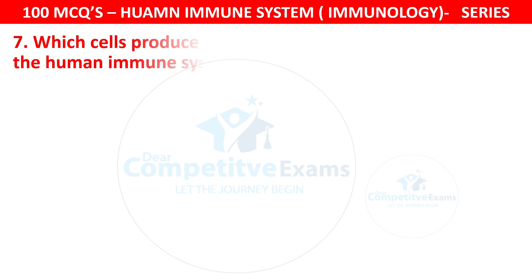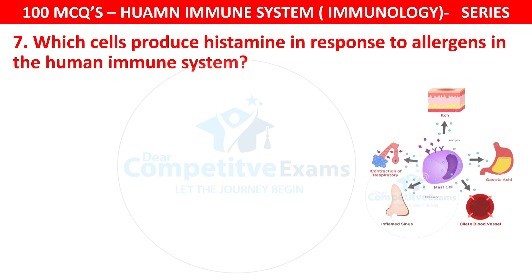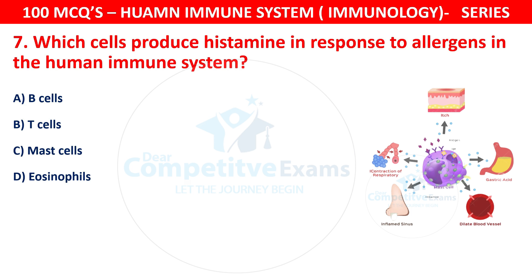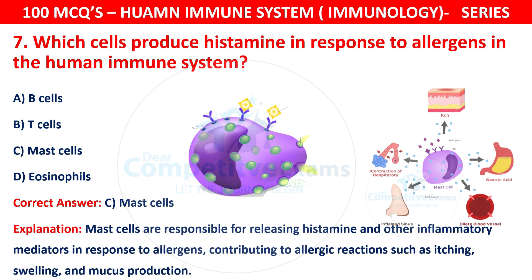Question 7. Which cells produce histamine in response to allergens in the human immune system? The options are B cells, T cells, mast cells, or eosinophils. The correct answer is C — mast cells. Mast cells are responsible for releasing histamine and other inflammatory mediators in response to allergens, contributing to allergic reactions such as itching, swelling, and mucus production.